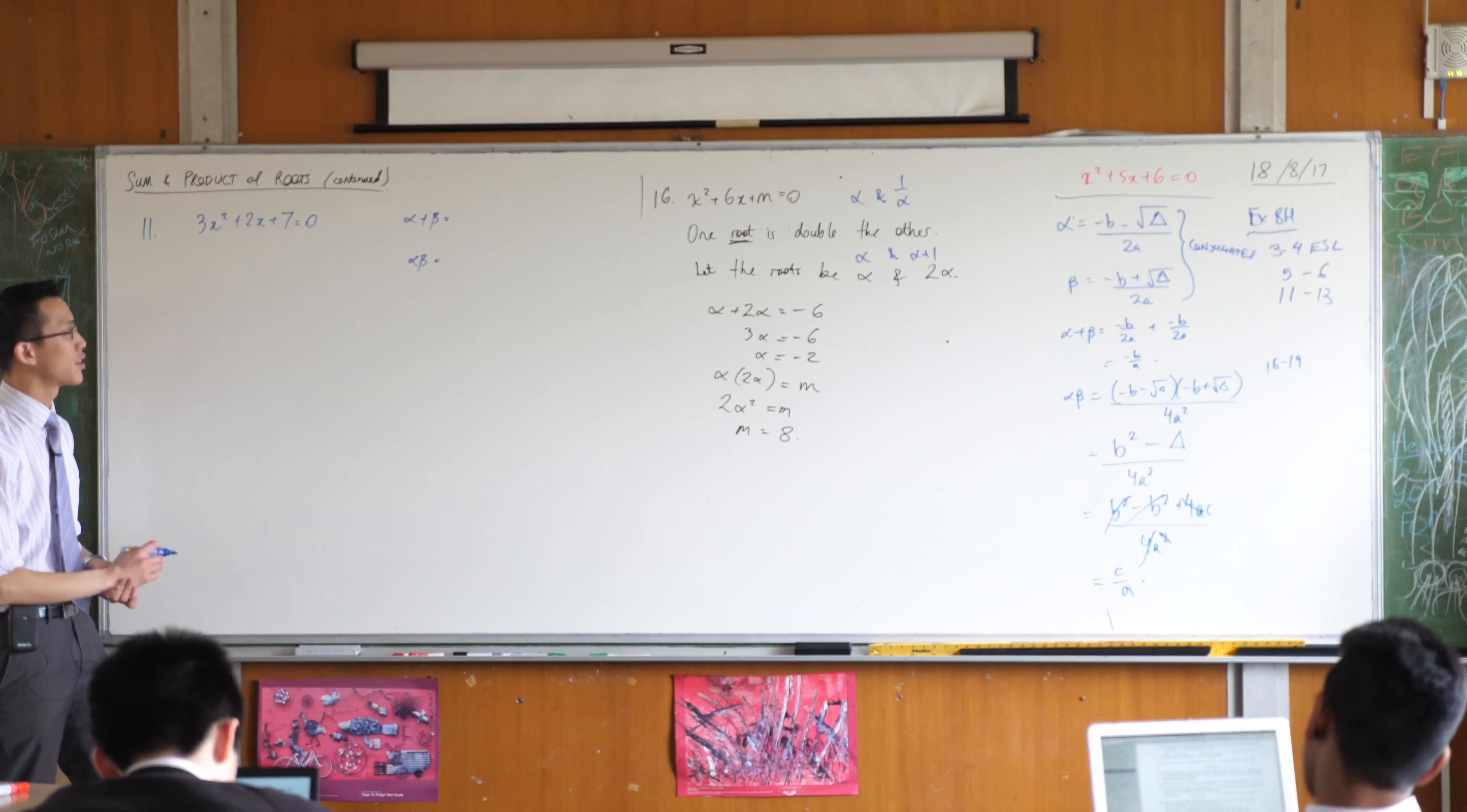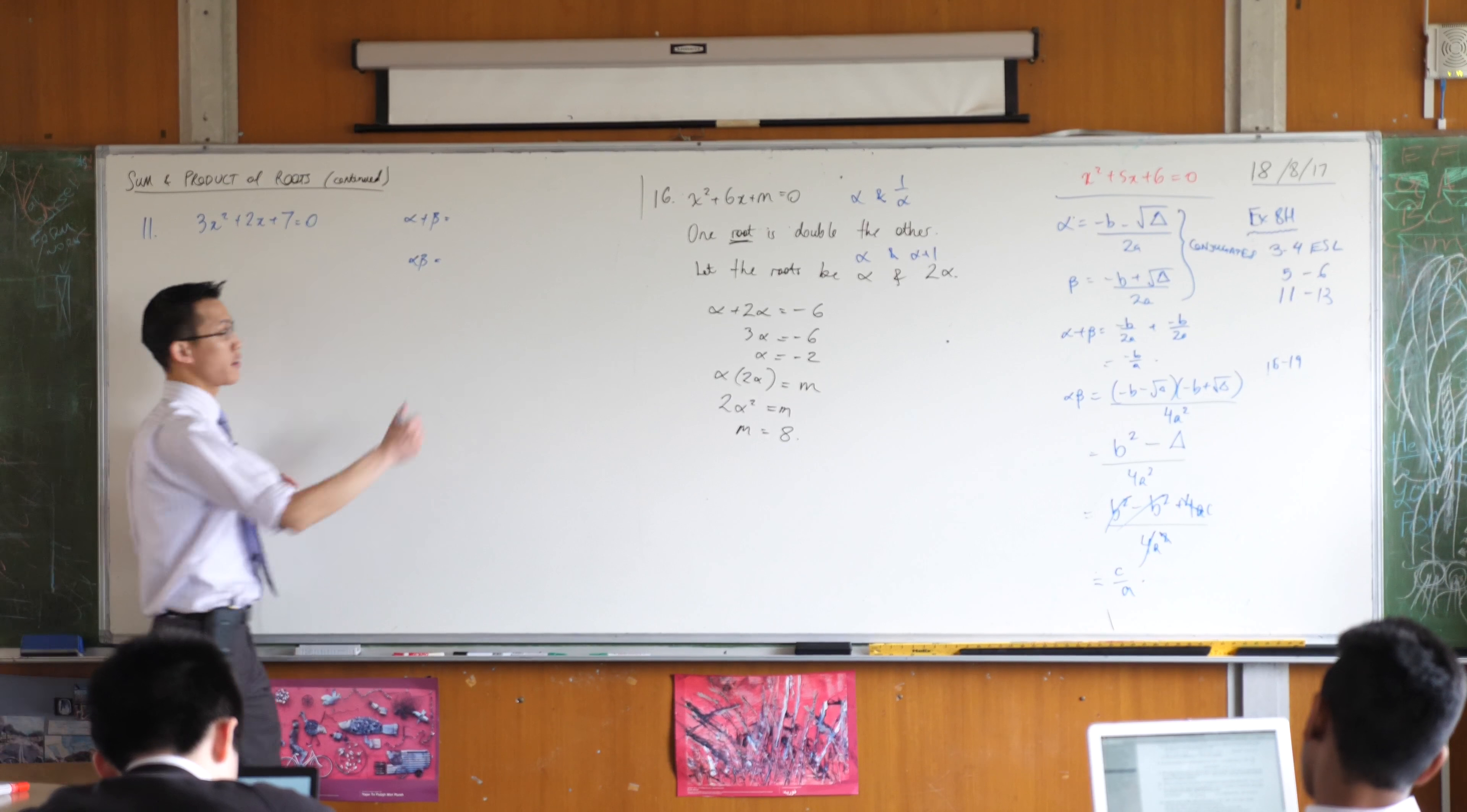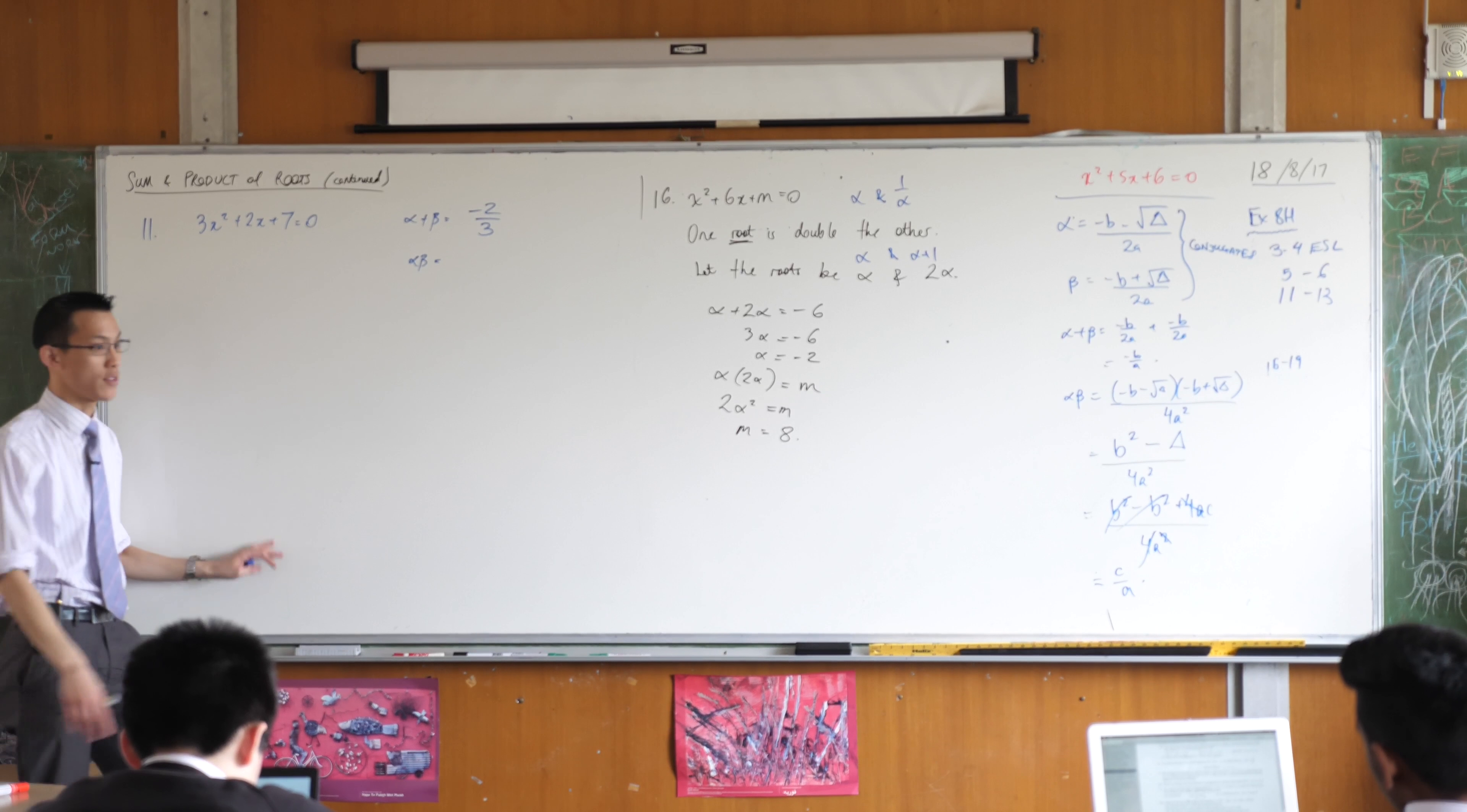So here's the way we're going to have a go at this. First let's work out the sum and product. In this case the sum and product is minus 2 over 3. There's the minus b over a and the product of roots will be 7 over 3.